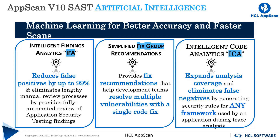ICA addresses and virtually eliminates this issue by applying machine learning to the identification and markup of APIs. Most amazingly, ICA does this on the fly. Every time it encounters a new API or framework, it instantly determines whether it is taintable and creates a rule, which is then used by the analysis engine to determine whether the application's data flow contains a real vulnerability or not.